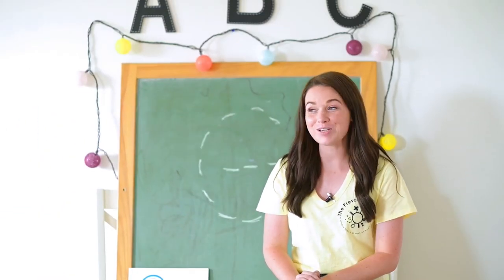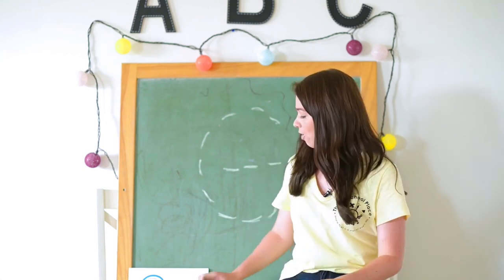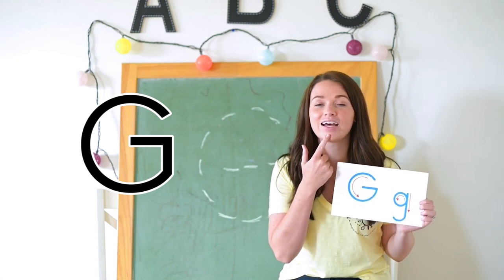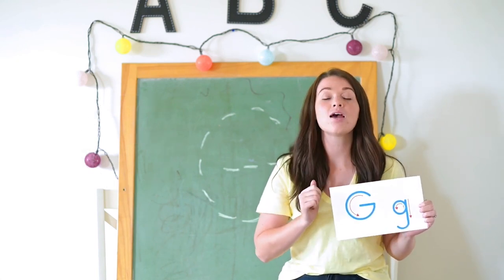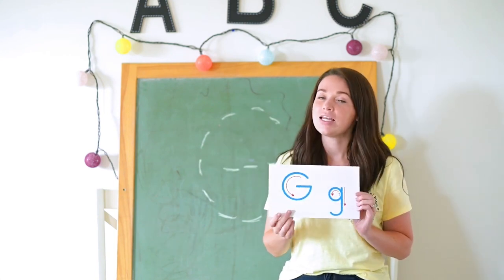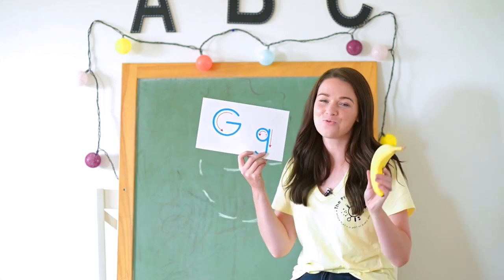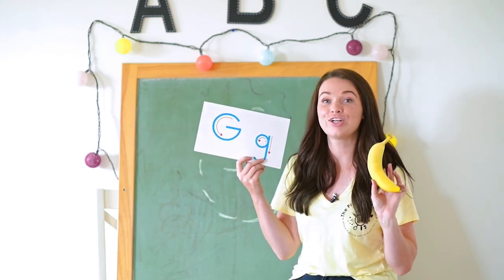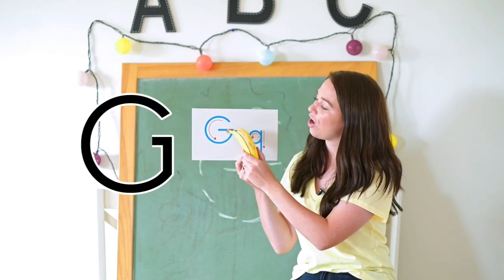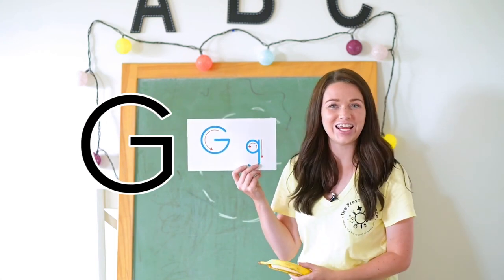That was fun learning about the letter G with our new gorilla friend. Let's practice tracing the letter G now. G says G, G, G. Can you say it with me? G, G, G. When we trace a G, let's trace it with a banana for our gorilla. Around, curve, across G. Around, curve, across G. Very good!